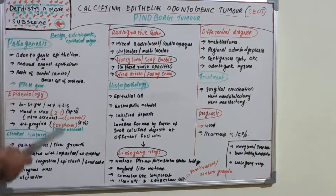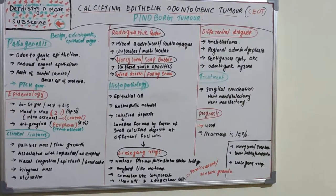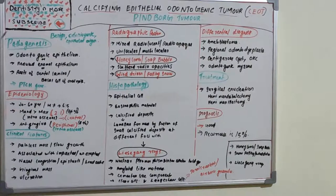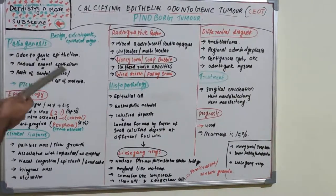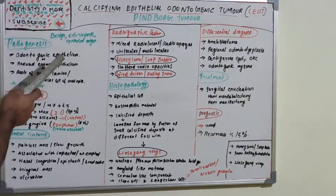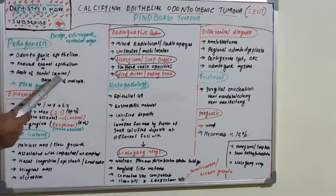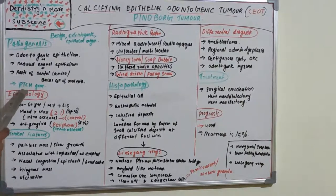Regarding pathogenesis, Pindborg himself said it originated from odontogenic epithelium. Others said it arises from the reduced enamel epithelium of a closely related unerupted tooth, or from the rests of dental laminae, or from basal cells of oral epithelium. So the origin has various theories — odontogenic epithelium, reduced enamel epithelium of an unerupted tooth, rests of dental laminae, or basal cells of oral epithelium. It is also associated with mutation of the PTCH gene.